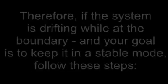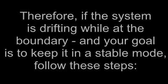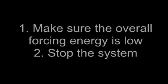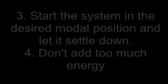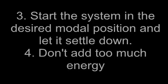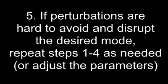So if the system is drifting while you're at the boundary and your goal is to keep it stable, follow these steps. Number one: make sure the overall forcing energy is low and then stop the system. Then start the system in the desired modal position and let it settle down — don't add too much energy. If perturbations are hard to avoid or disrupt, you can either repeat these steps or adjust the parameters.